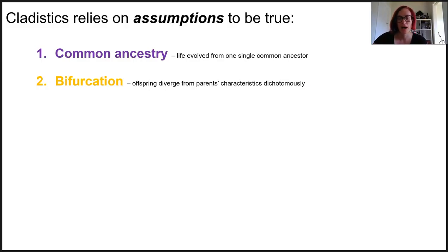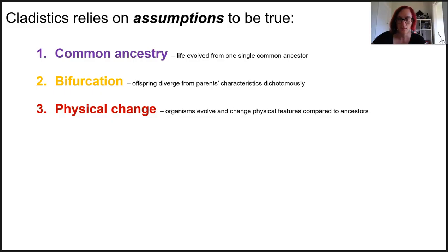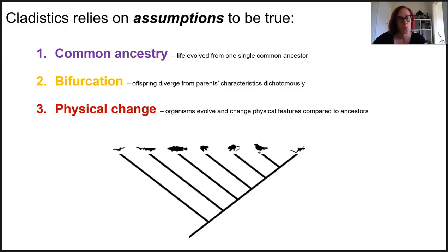The second assumption is bifurcation. The idea is that when offspring change compared to their parents, their characteristics diverge dichotomously, meaning they move in either one of two directions — they will change or they will stay the same as their parents. As an organism evolves away from the point of bifurcation, through accrual of these changes, their physical features will become increasingly different to that of their ancestor.